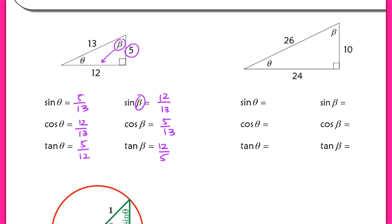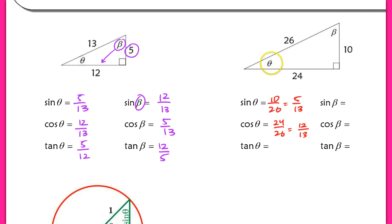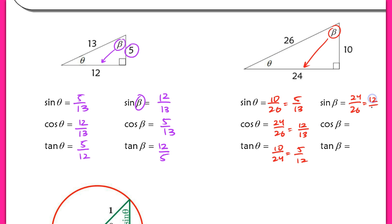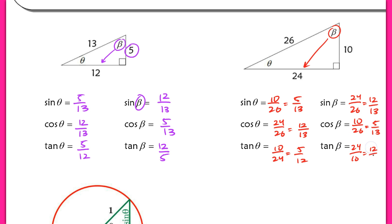Coming over to the other triangle on the right, if I take the sine of theta, that would be the opposite 10 over 26, which simplifies to 5 thirteenths. The cosine of theta would be 24 over 26, which simplifies to 12 thirteenths. And the tangent of theta will be 10 over 24, simplifying to 5 twelfths. The sine of beta is 24 over 26, giving 12 thirteenths. The cosine of beta is 10 over 26, giving 5 thirteenths. And the tangent of beta is 24 over 10, which simplifies to 12 fifths.